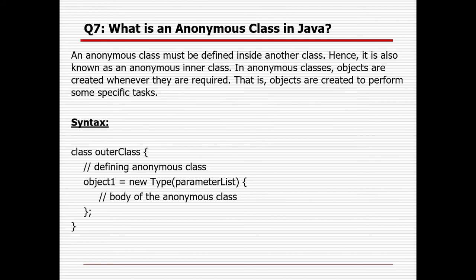What is an anonymous class in Java? An anonymous class must be defined inside another class, hence it is also called an anonymous inner class. The outside class is the outer class and the class inside is the inner class. In anonymous classes, objects are created whenever they are required to perform some specific task, and we can give the body of the anonymous class after the object is created.